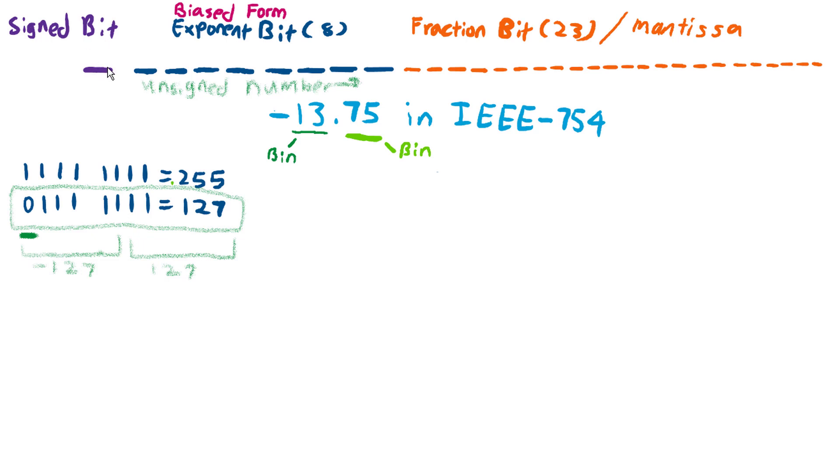Then we are going to store the exponent bit or the bias form. We are going to look at what is exponent bit later. And then we are going to store the remaining fraction bit in here. The fraction bit is also known as mantissa. So in total, one plus eight bits plus 23 bits results in 32 bits.